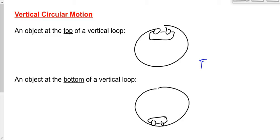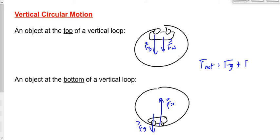What forces act at the top and bottom? Gravity acts downward in both cases. The other force is the normal force. At the top of the circle, the normal force acts downward; at the bottom, it acts upward. The normal force at the bottom is bigger than gravity — otherwise you wouldn't be going in a circle. We say F_net equals the sum of the forces, Fg plus Fn, and then replace F_net with mv² / r.